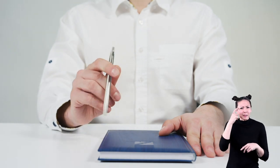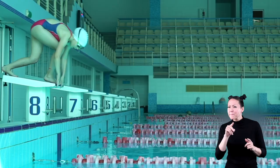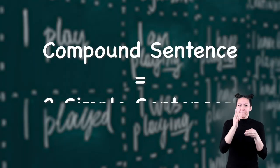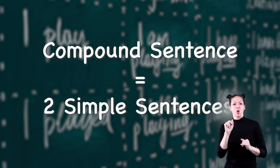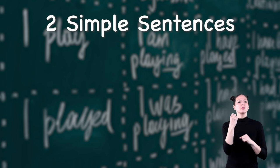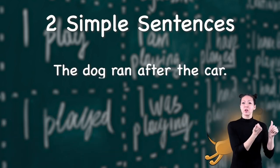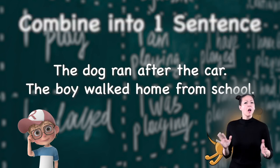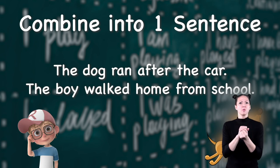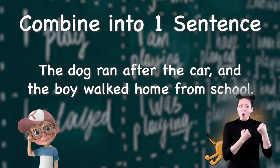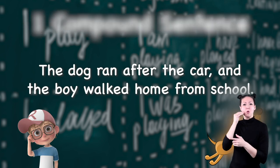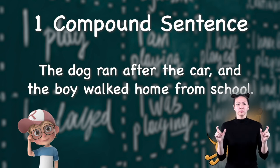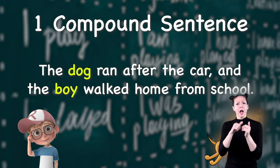What exactly is a compound sentence? Well, basically a compound sentence is two complete simple sentences, or independent clauses, put together into one. Take these two sentences: 'The dog ran after the car.' 'The boy walked home from school.' They're both simple sentences. But when we put them together, it reads: 'The dog ran after the car and the boy walked home from school.' Now it's one sentence with two independent clauses — thus, it's a compound sentence.